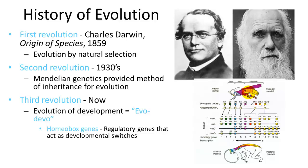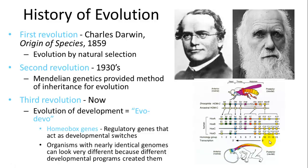Homeobox genes are a set of genes traceable in humans and flies — when controlled and manipulated they code for different developmental stages within an organism. The same genes that tell a fly where to develop its head, tail, and wings are also important for development of different parts of the human body. Organisms with nearly identical genomes can look very different because of different developmental programs.